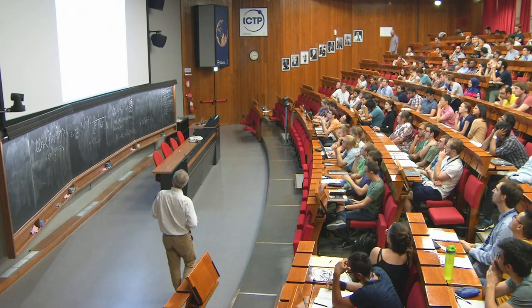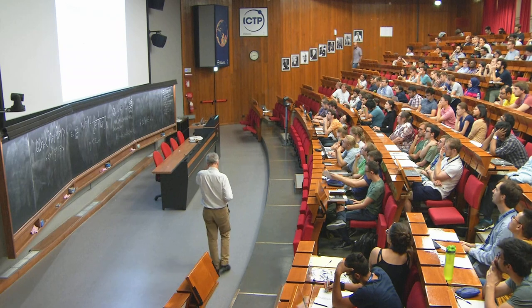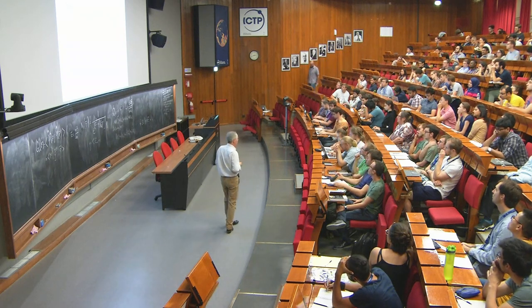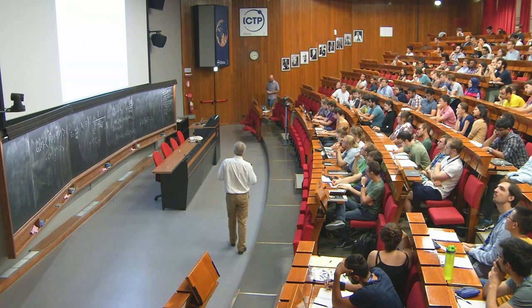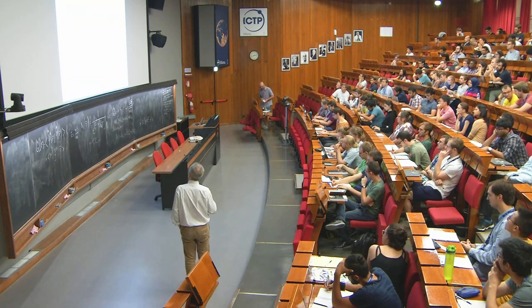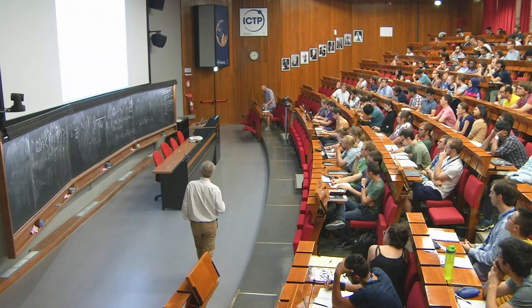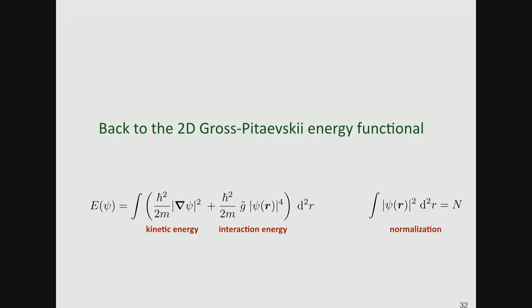Let's go back to the 2D Gross-Pitaevsky energy functional: kinetic energy |∇ψ|², interaction energy |ψ|⁴, with the wave function normalized so its integral over all space equals the number of particles N. What I'm really looking at is a canonical ensemble — I fix the number of particles but impose temperature from outside by coupling to an energy reservoir.